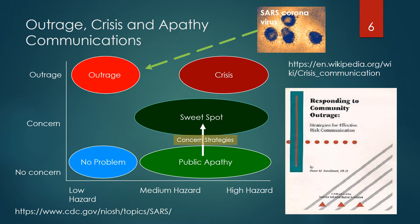This diagram is adapted from Dr. Peter Sandman's book, Responding to Community Outrage — highly recommended for anyone in public health leadership. There are two scales: level of hazard or real public risk, ranging from low to high, and amount of concern, ranging from none to outrage. The blue oval represents a situation of low concern and hazard — the area of no concern or problems. The red oval is an area of high concern to the point of outrage, but low real public health risk or hazard. An example of an outrage situation would include SARS.